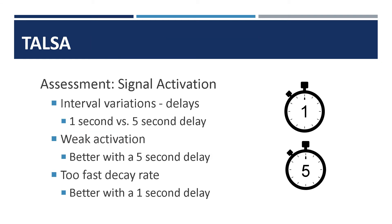How can the TULSA determine if there is weak signal activation or too fast decay rate? The use of interval variations or delays reveal these differences. Patients who have a problem with weak activation do better with a five-second delay between the stimulus and the response — it gives them extra time to strengthen the signal. Conversely, patients who have a problem with signal duration, or who have a too fast decay rate, do better with only a one-second delay. They need to give their response before they lose the word.